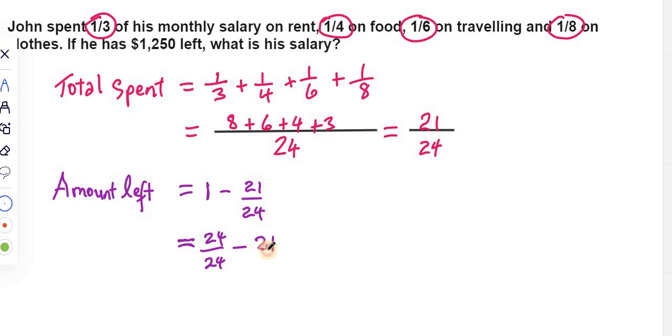Now, this makes it easy, because we can rewrite one as 24 out of 24. And so we can take the 21 out of 24 from 24 24ths, and that will leave us with 3 out of 24. And of course, 3 out of 24 can be simplified as 1 out of 8.